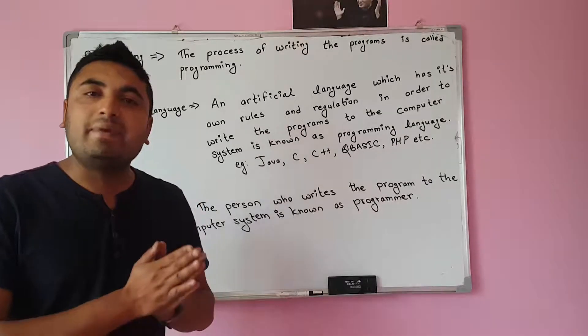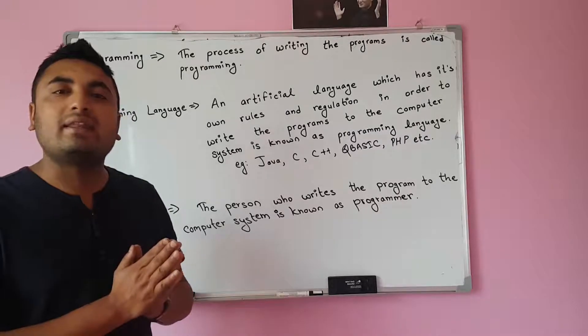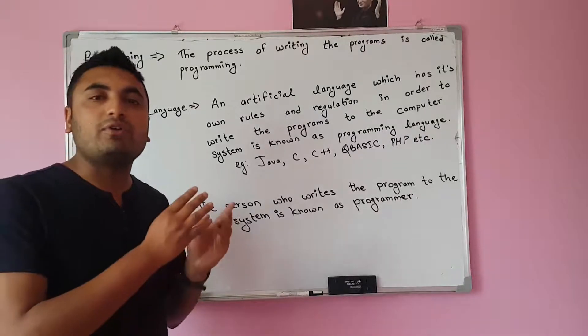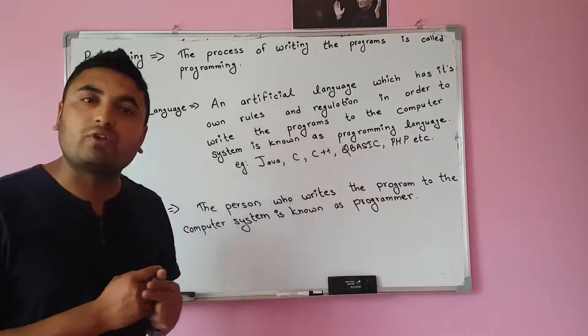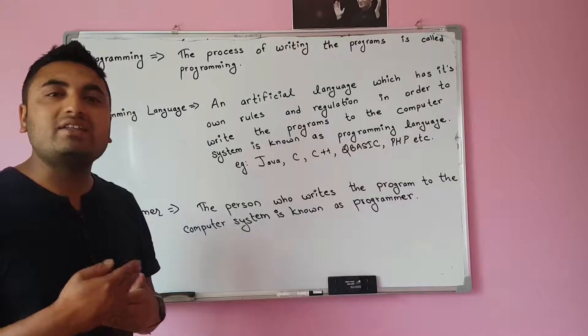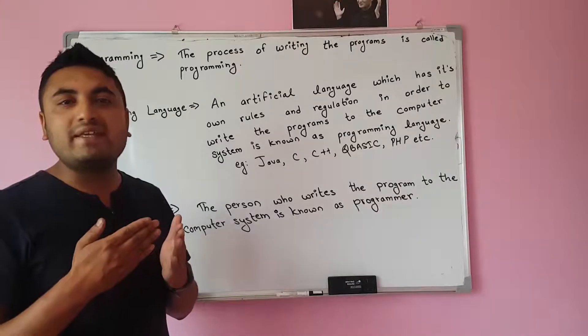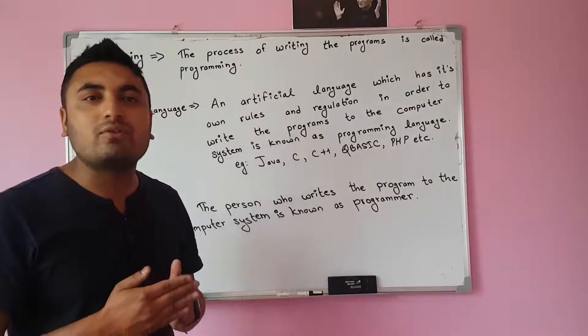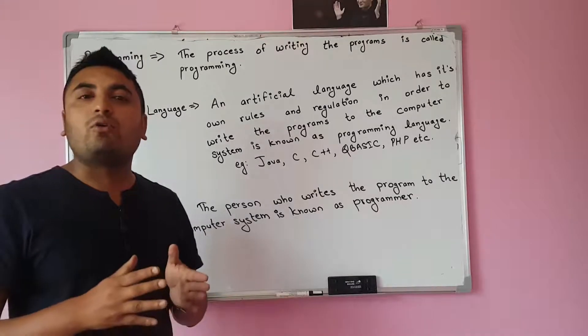So a computer is made up of two parts, and they are computer hardware and computer software. What is computer hardware? The main physical parts of the computer system are known as computer hardware.